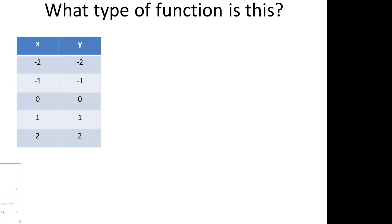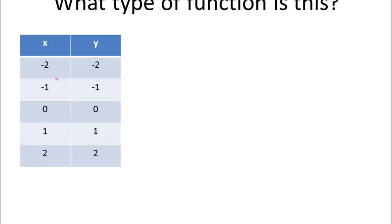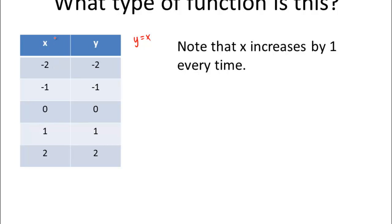Here's the first one. This is one of our parent functions. You should be able to tell by looking at this what type of function it is. If you put in negative 2, you get negative 2; negative 1, negative 1; 0, 0; 1, 1; 2, 2. You should recognize this is the y equals x linear parent function. Note that x increases by 1 every time — this is an important part of defining what type of function it is.